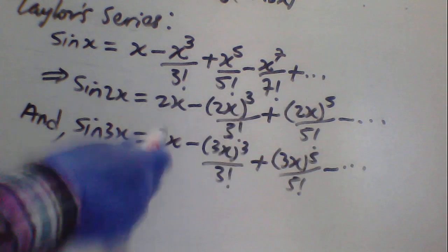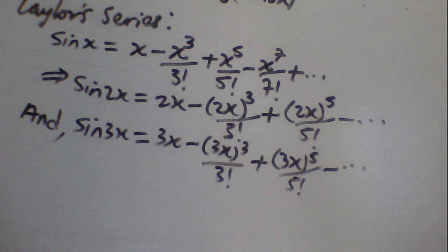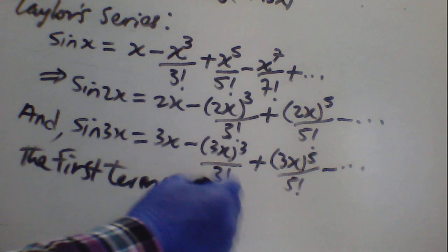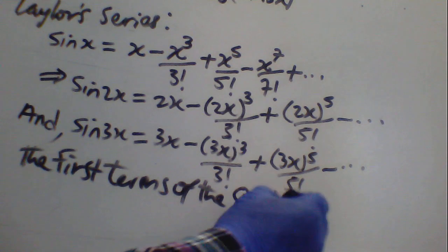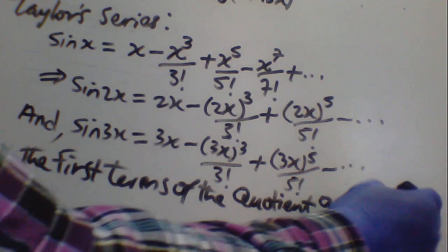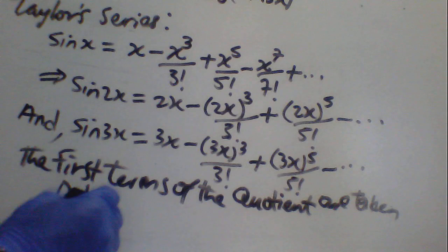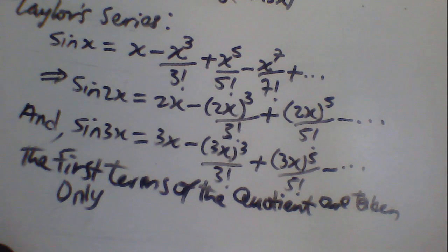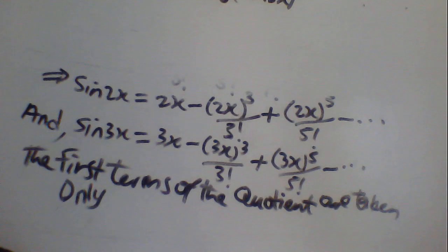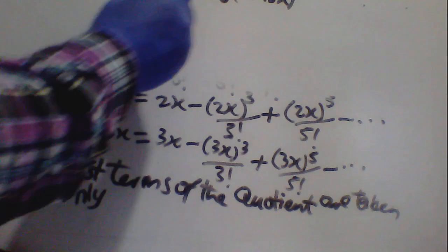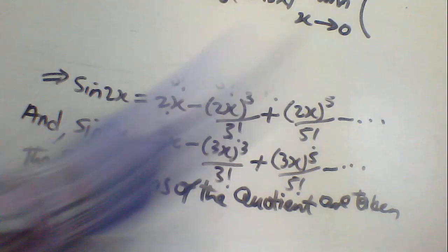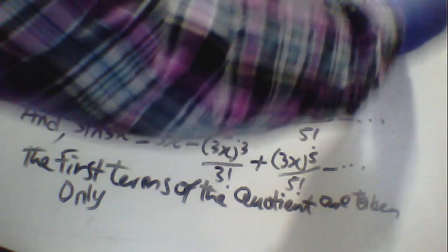We can ignore other terms and take the first term only. The reason is that if we substitute x→0, other terms will also tend to zero, so there is no need for them. So we take the first terms only. This is equal to lim(x→0) of [2x/3x] to the power of 3.